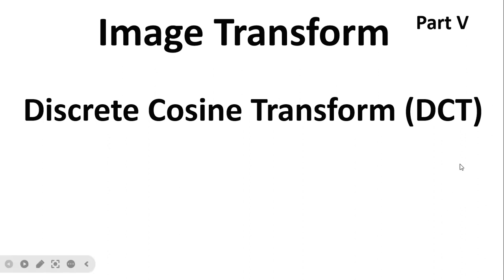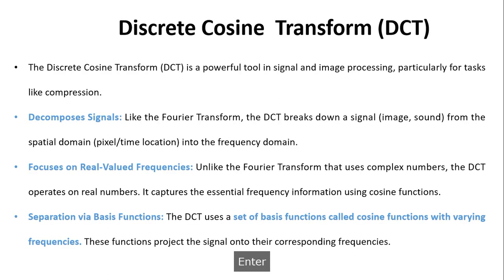Dear students, welcome to my channel. The topic of this video is image transform. This is the fifth video on this topic, and in this video I am going to discuss Discrete Cosine Transform, that is DCT. DCT is a powerful tool in signal and image processing, particularly for tasks like compression.